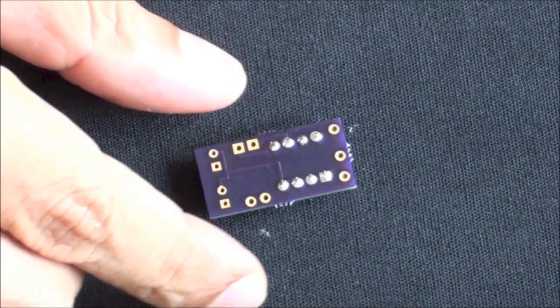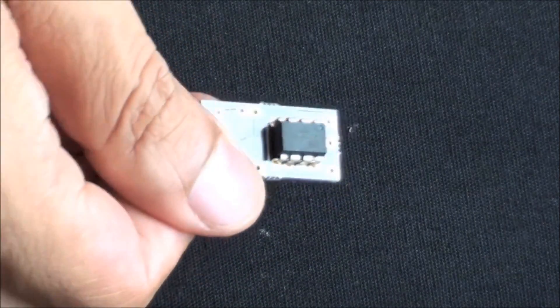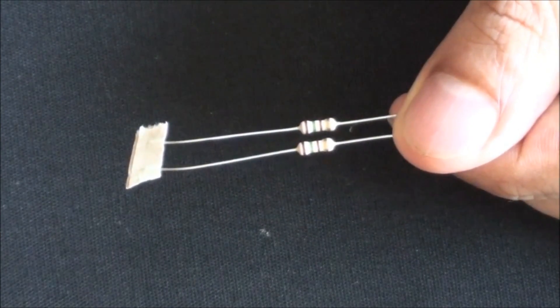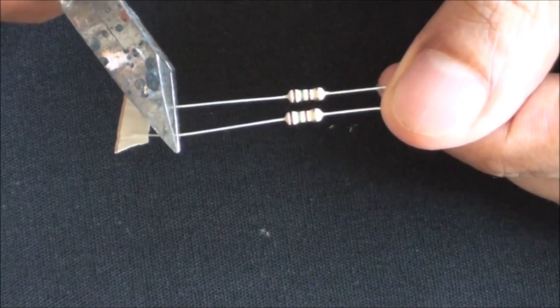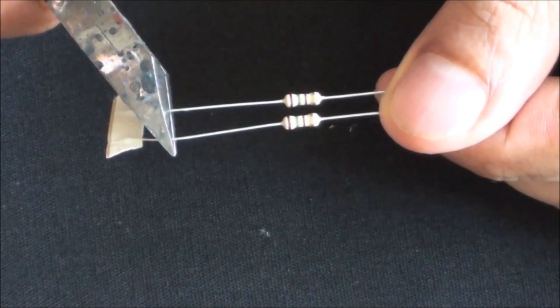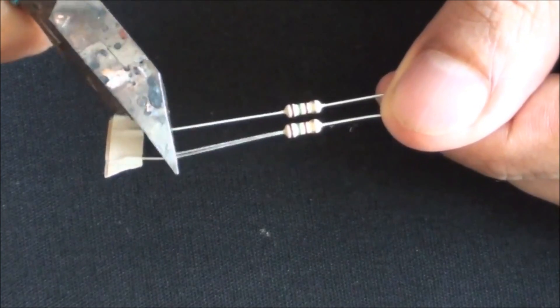This is now the completed mounting of the microcontroller onto the PCB board. Now it's time to mount the resistors. We will have to cut the resistor ends off. Leave about one inch of the wire on each side of the resistor when cutting it.